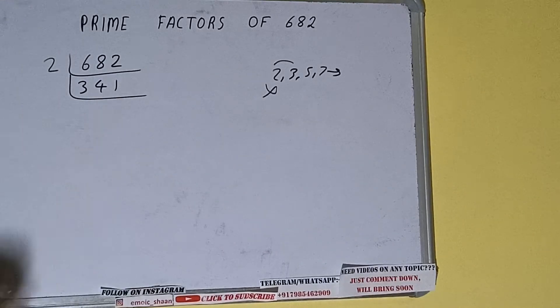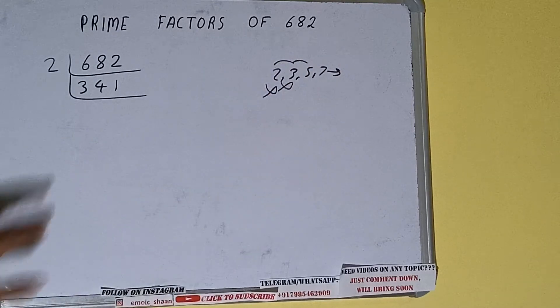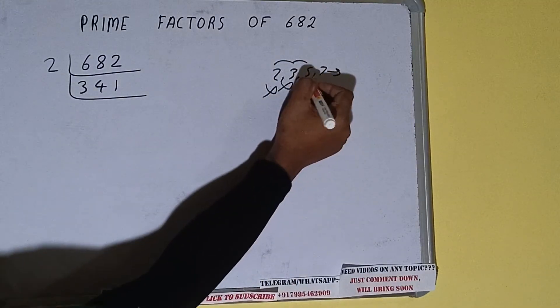341. It is not divisible by 3 also. Let's check with 5. The last digit is neither 5 nor 0, so it is not divisible by 5 also.